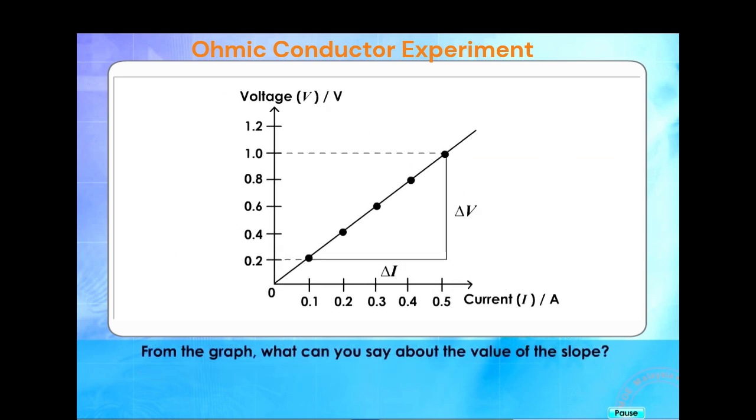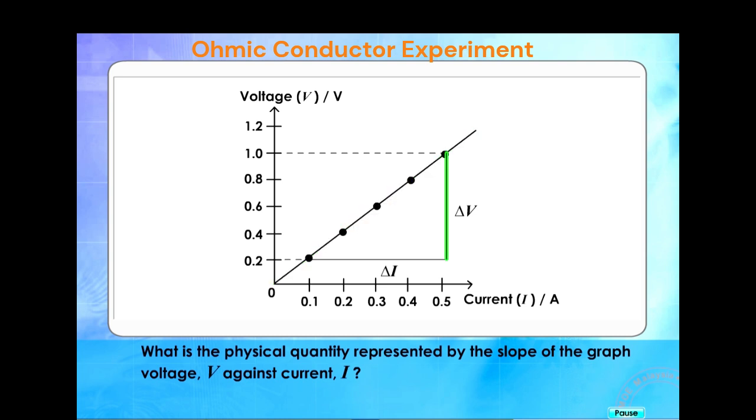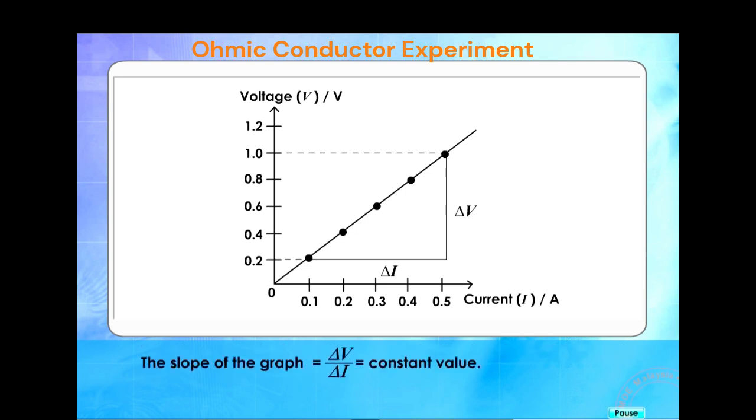From the graph, what can you say about the value of the slope? What is the physical quantity represented by the slope of the graph of voltage V against current I?